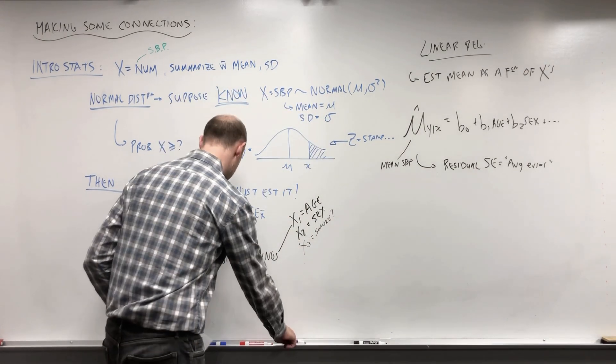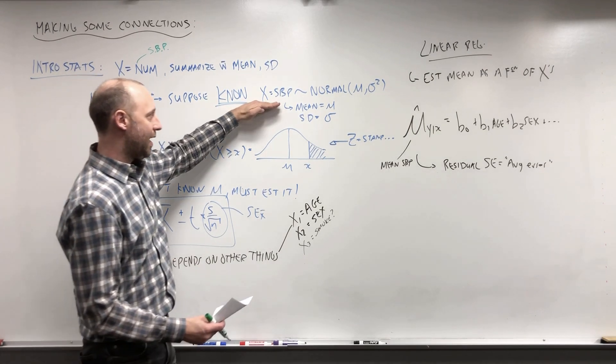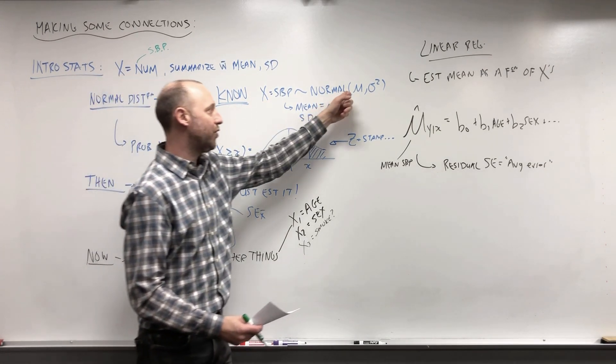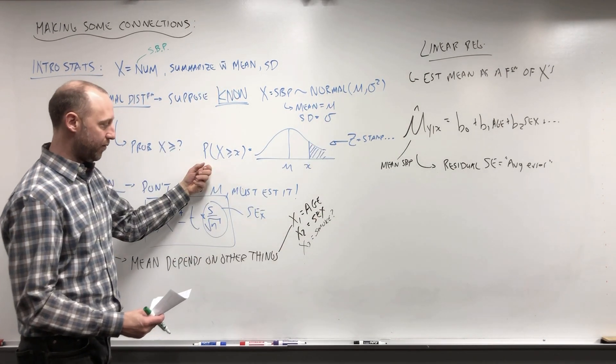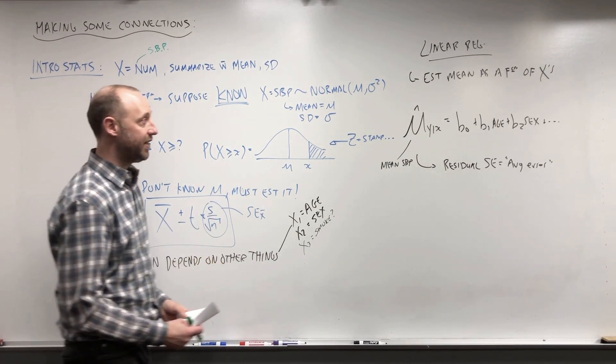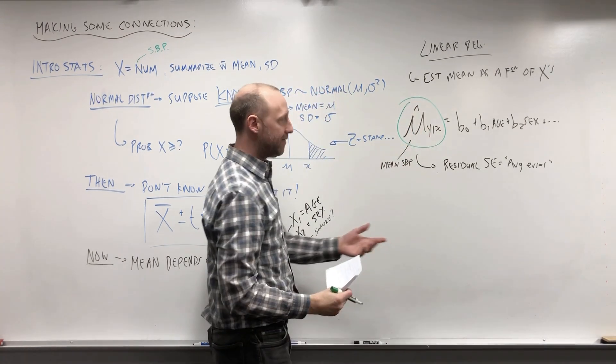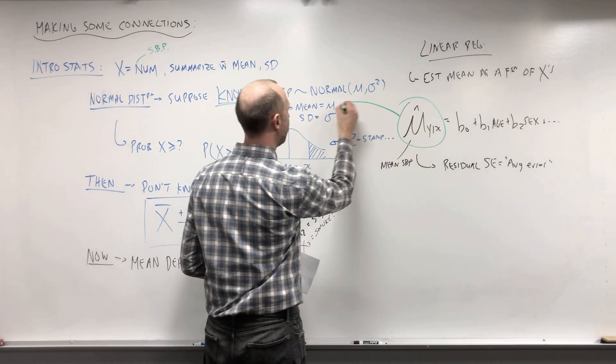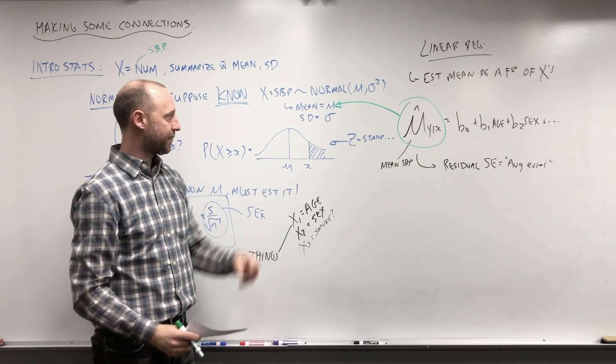And now where we can go with this is, rather than saying we know that blood pressures are normal, we know the mean, we know the standard deviation, we would say, well, we don't know those, we can estimate them, but they probably depend on other things. We can use linear regression to estimate the mean. So say, given someone's age or sex and so on, here's what we estimate their mean should be.